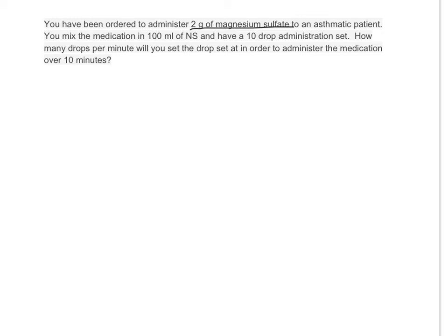Let's set up the formula using the MedMath Simplified formula. We start with what we're asking for — our answer is going to be drops per minute. We look at our desired dose: it's 2 grams of magnesium sulfate over 10 minutes, but we've already mixed it, so we can actually take this out of the equation for calculation purposes.